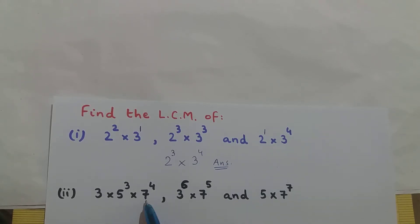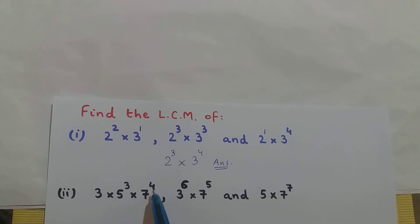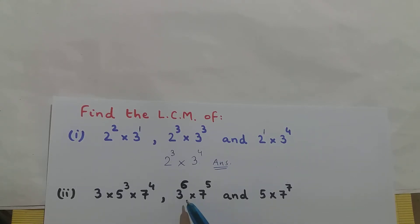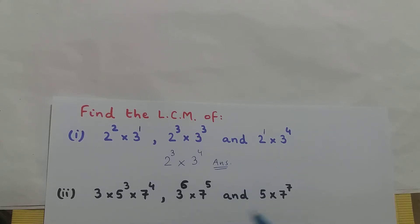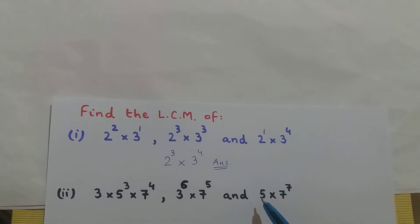Now in each of these expressions, everything is getting multiplied to each other. In the first, 3 is multiplied to 5³ which is multiplied to 7⁴. In the second, 3⁶ is multiplied to 7⁵. And in the third, 5 is multiplied to 7⁷.